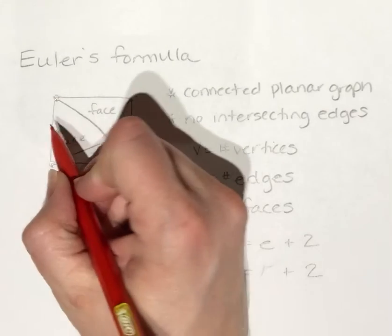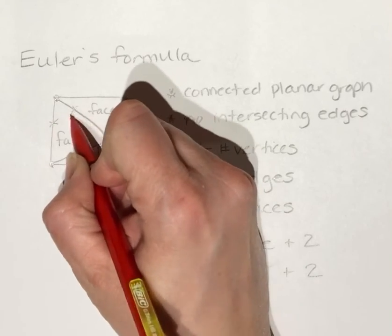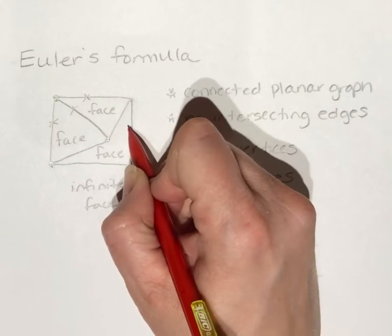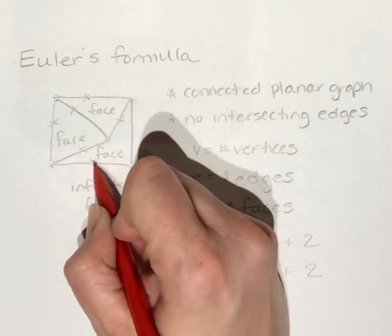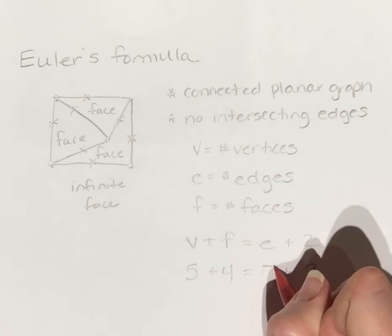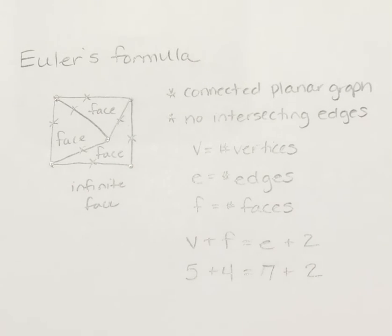And then I have 1, 2, 3, 4, 5, 6, 7 edges. And it shows 5 vertices plus 4 faces is equal to 7 edges plus 2. So they're going to ask you to verify a graph using Euler's formula.